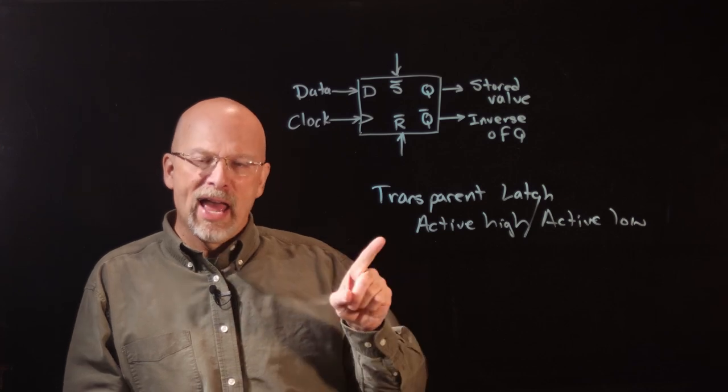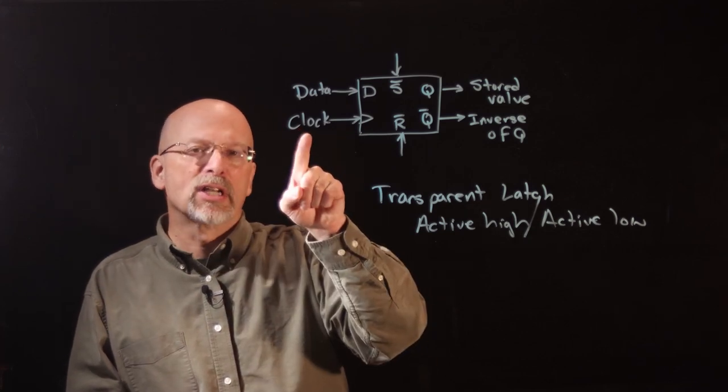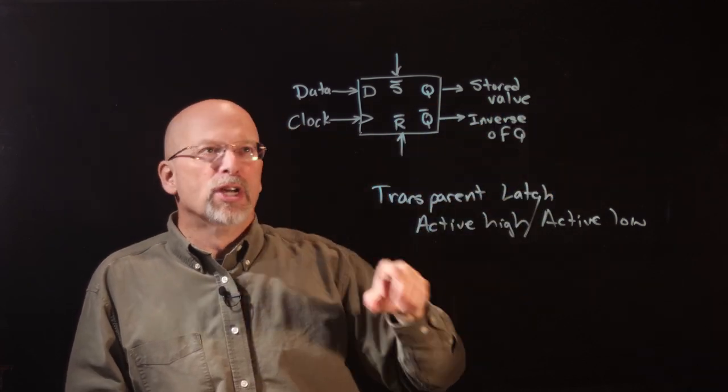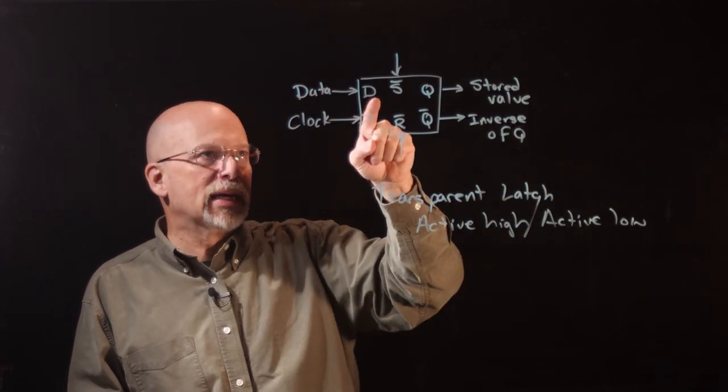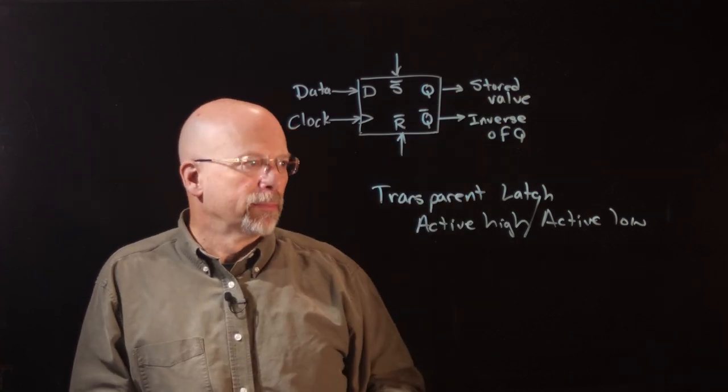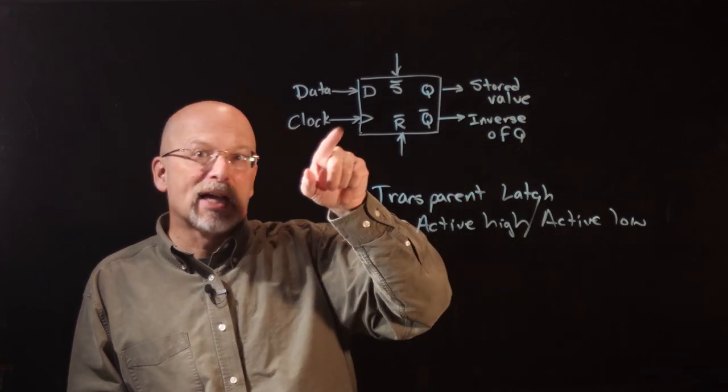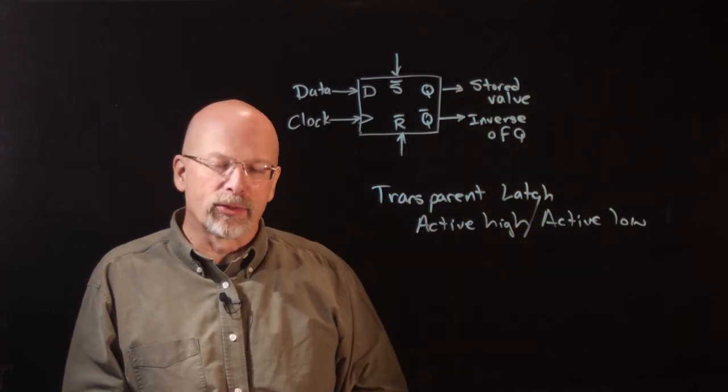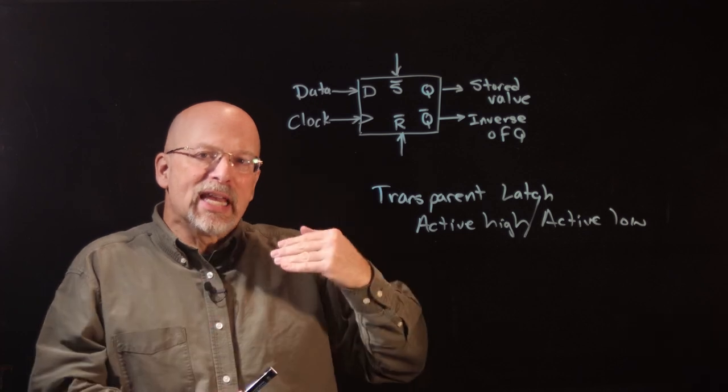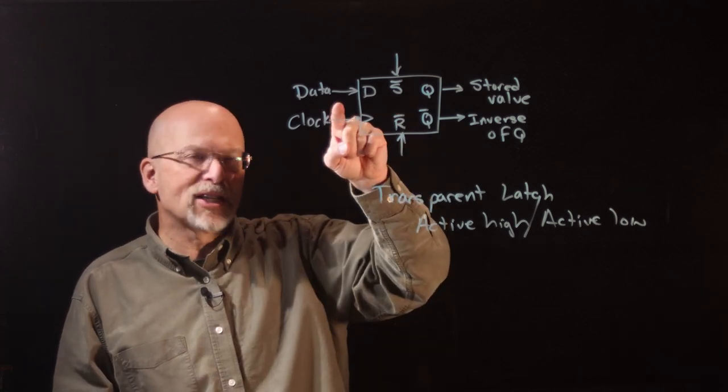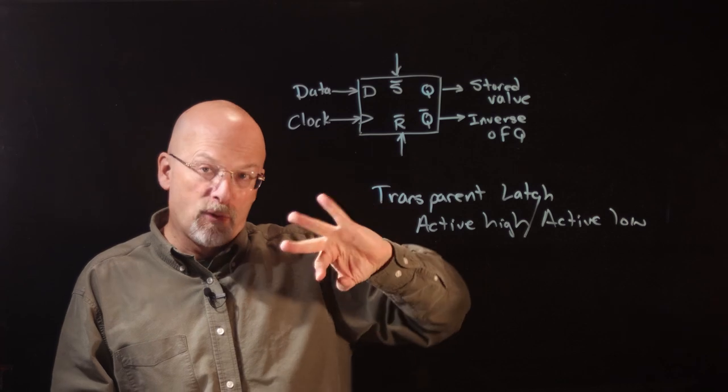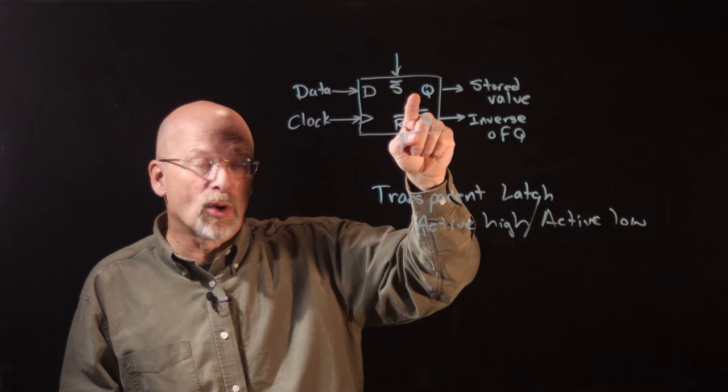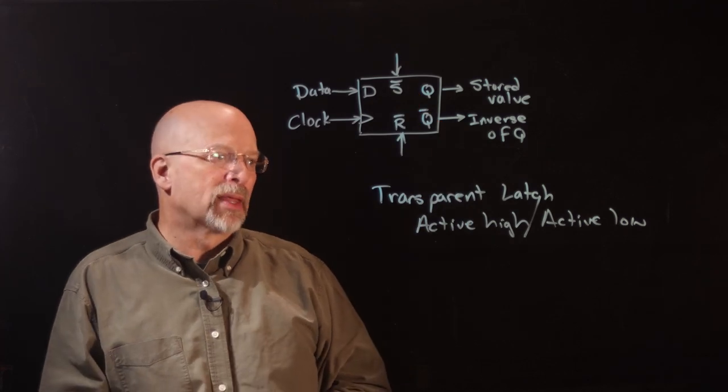Let's talk about active high. Active high said that as long as there's a logic 1 on the clock, the data is just going to pass straight through to Q. So whatever changes happen on the data input D are going to be reflected on Q. Active low said that any time the clock is a zero, that same instance is going to happen, where the data just gets passed straight through Q. When it goes to the inactive state, the opposite state, then whatever the last value that was on D before it went to the inactive state for the clock, that value is going to be latched or held on to Q.